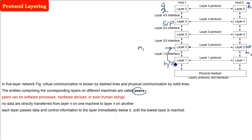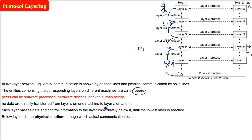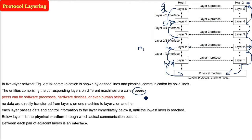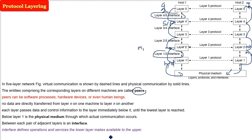Data flows from layer five down through layers four, three, two, one, and is given for final delivery. Below layer one is the actual physical medium - coaxial cables, fiber, where actual bit transmission takes place. Between each layer there is an interface, which is most important because it defines the operations and services offered from the lower layer to the upper layer.